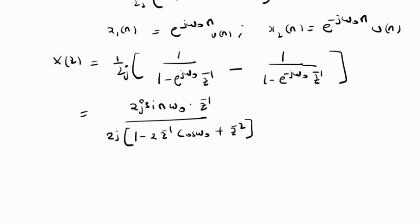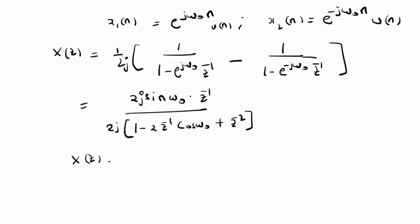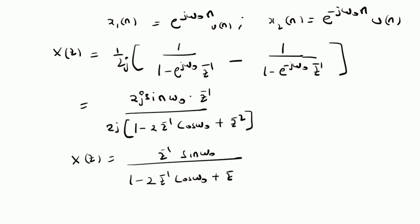Therefore, the overall Z-transform for the sinusoidal sine function is X(z) = z^(-1) sin(omega naught) / (1 - 2 z^(-1) cos(omega naught) + z^(-2)), and the corresponding ROC is |z| > 1, because both X1(z) and X2(z) have ROC |z| > 1 — the Z-plane outside the unit circle.